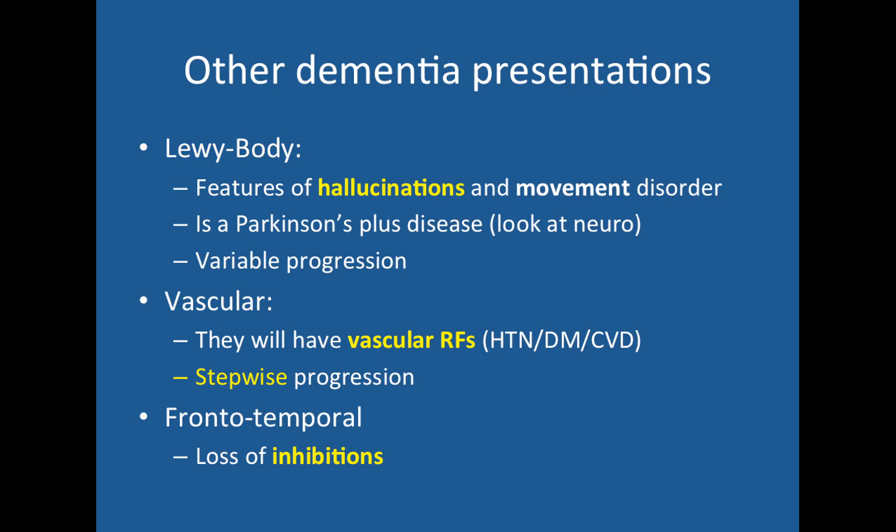In Lewy body dementia, the question will typically show someone with memory loss, visual hallucinations, and movement disorder. It has a variable progression, but the important things to remember are hallucinations and movement problems. In vascular dementia, the patient will have vascular risk factors — maybe previous strokes, hypertension, diabetes, previous MI, or obesity — and the condition shows a stepwise progression: they deteriorate with each infarct, then remain stable before deteriorating further.